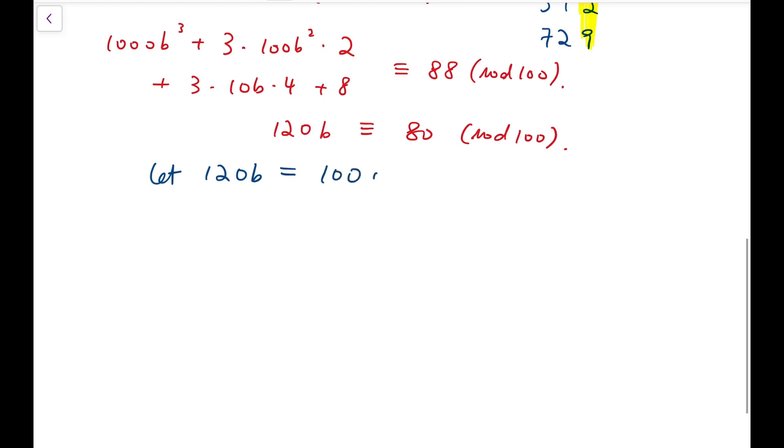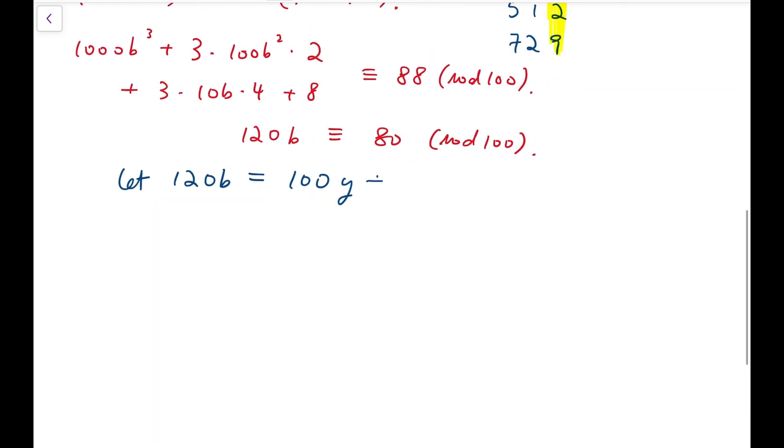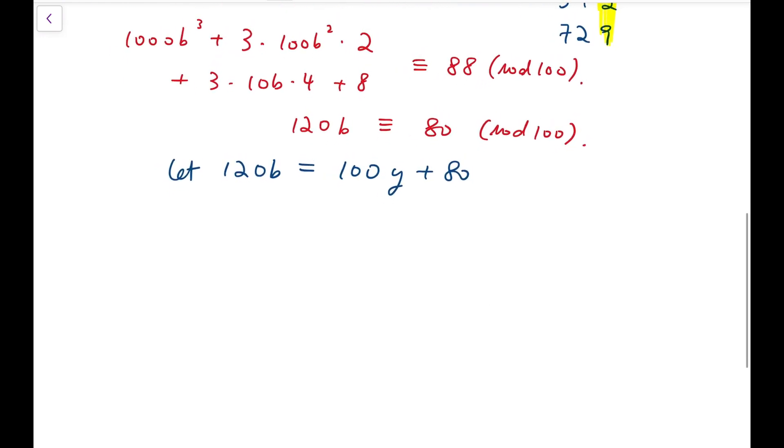Let 120 b to be equal to some multiple of 100 added by 80. Then I can divide both sides by 20. So that 6b equals 5y added by 4. So, at the end, I'm going to write b in mod 5. Because we know that I can only say multiples of b to be some multiple of 5 added by 4. So at last, I'm going to write b in terms of mod 5.